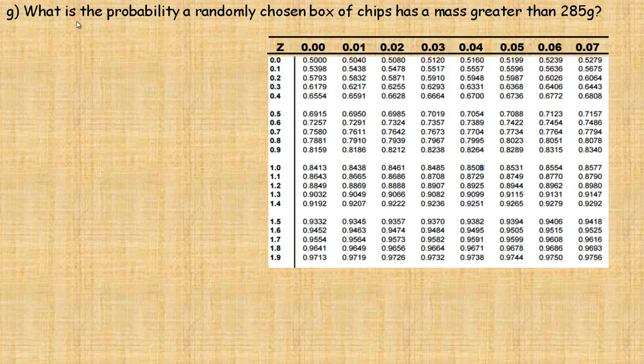One last example in G here asks, what is the probability of a randomly chosen box of chips has a mass greater than 285? So we did the less than, and we did the between probability on the previous page. Now we're doing a greater than. So we're doing one example of each.